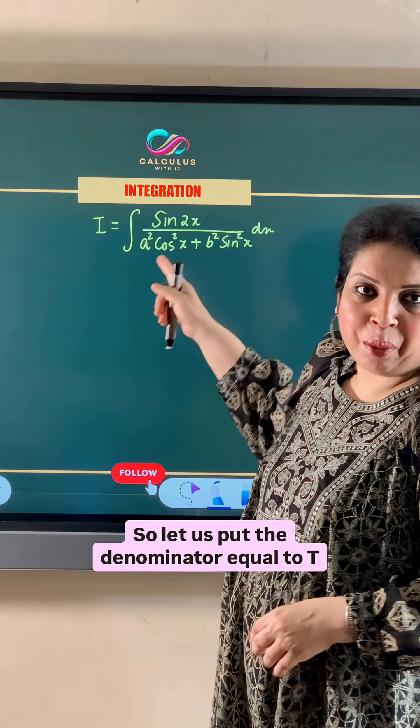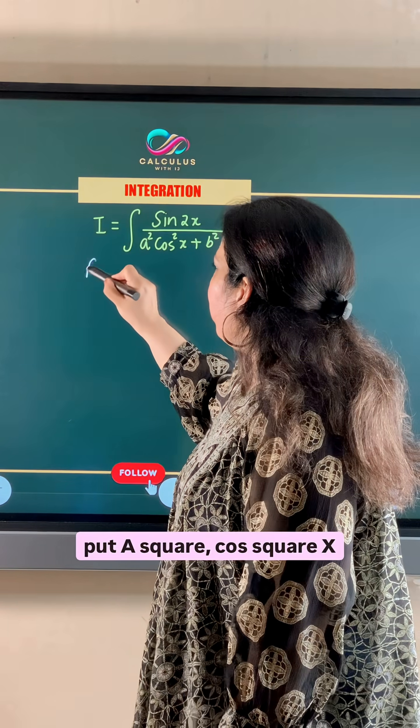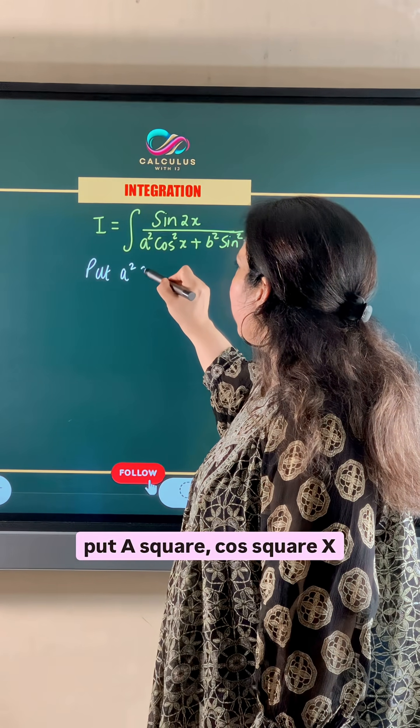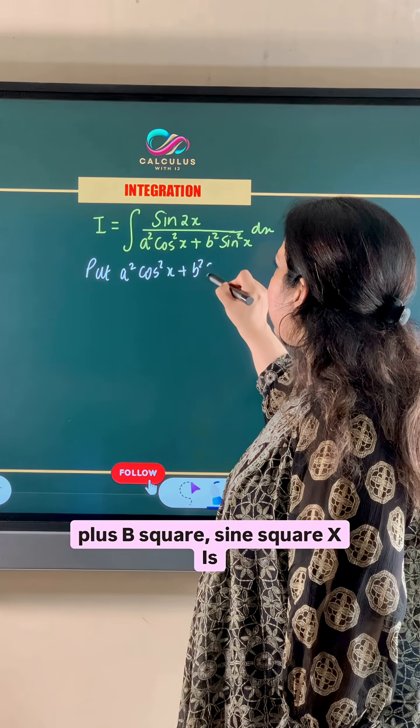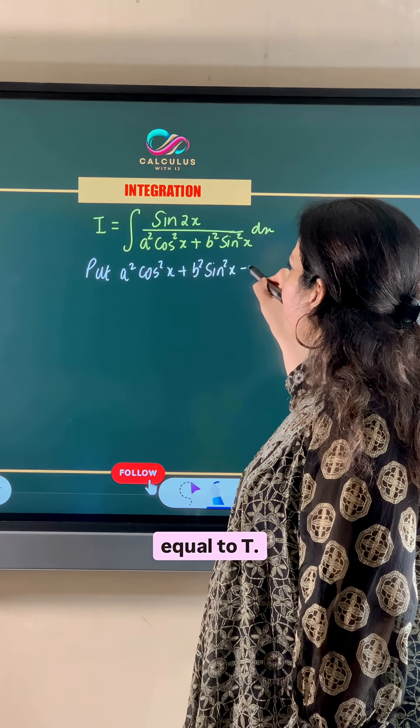So let us put the denominator equal to t. Put a square cos square x plus b square sin square x is equal to t.